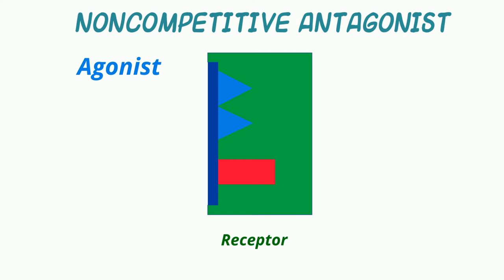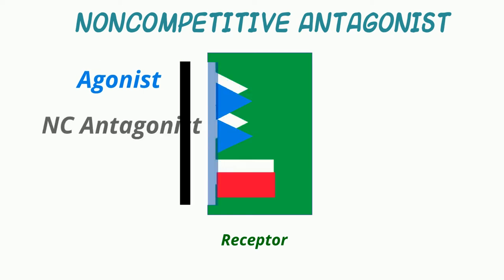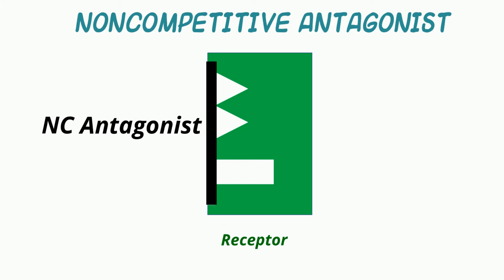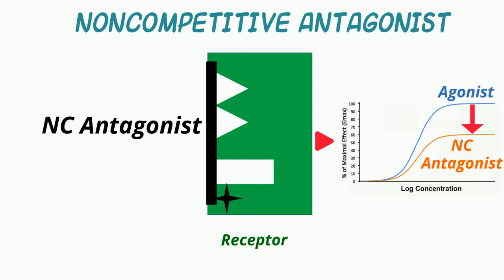Let's take a look at a different kind of antagonist — the so-called noncompetitive antagonist, which either binds at a site away from where the agonist binds but changes the receptor's ability to bind the agonist, or as shown here, binds the receptor and then covalently links to it, essentially preventing displacement by an agonist and appearing on the log-dose effect plot to reduce Emax consistent with the reduction of available receptors.